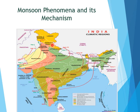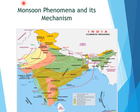Next, we will talk about the monsoon phenomenon and its mechanism. In spite of great diversity and variations in Indian climate and topography, the most important factor that lends unity to the Indian subcontinent is the monsoon. The word monsoon owes its origin to an Arabic word 'mausam' meaning season. These are periodic seasonal winds developed due to the differential heating and cooling of land and sea.